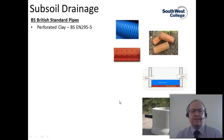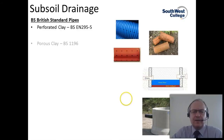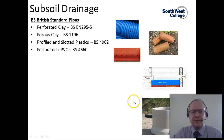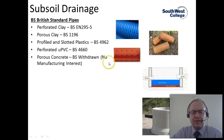There are British Standards for the pipes that specify their make-up. Perforated clay pipes come under BSEN295-5, porous clay under BS1196, profiled and slotted plastics — the modern type — under BS4962, perforated UPVC under BS4660, and porous concrete, though that British Standard has been withdrawn as there are currently no manufacturers interested in producing porous concrete drainage pipes anymore.